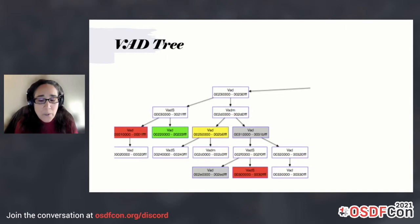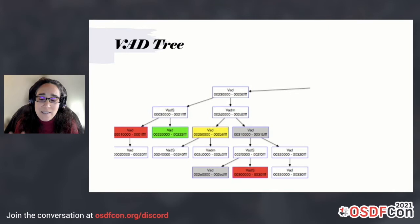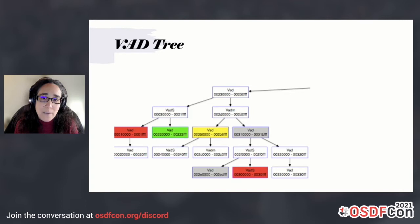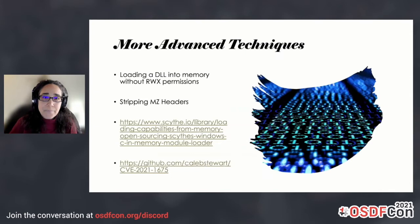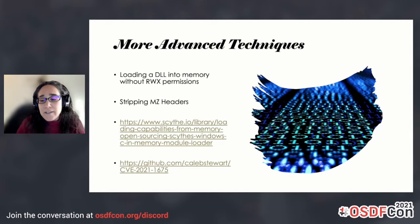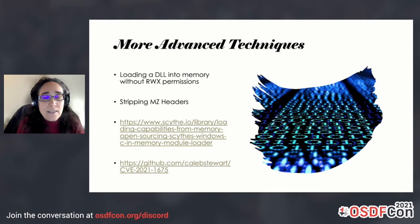We talked a little bit about the VAD tree. This is important in order to figure out how to get the malicious code from the next techniques we're going to discuss. The VAD tree basically contains all of the different memory segments loaded by a process at that moment in time — all the DLLs, different file objects, and other memory segments within that process's address space. So for both stripped MZ headers and unlinked DLLs, we have to look at the VAD tree to dump those out.